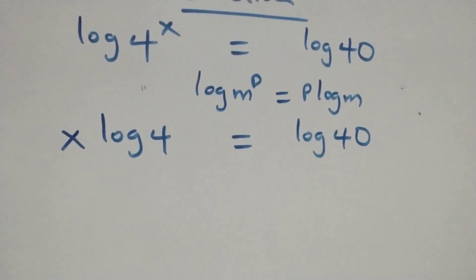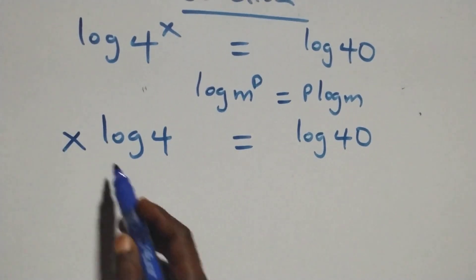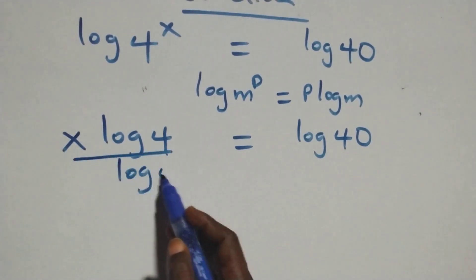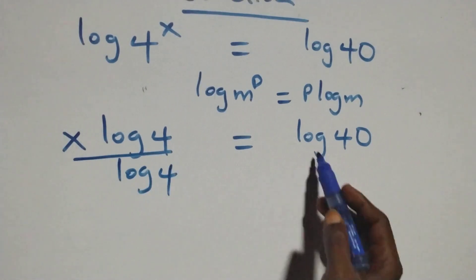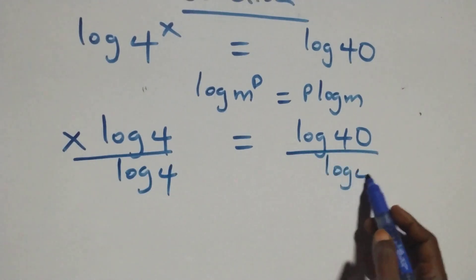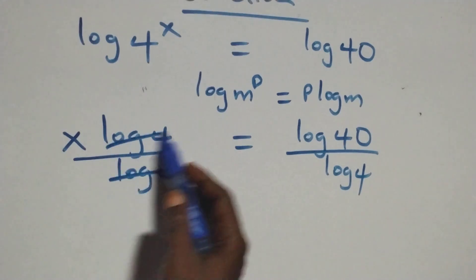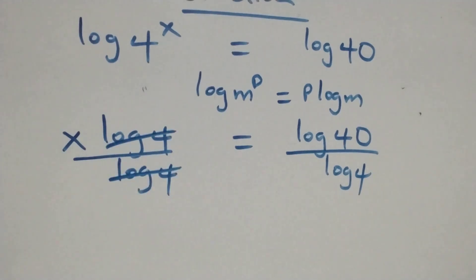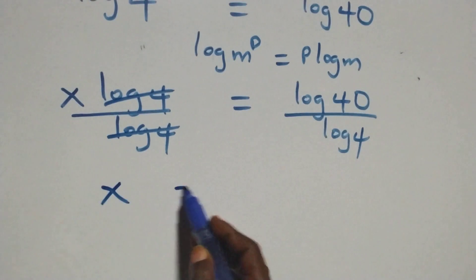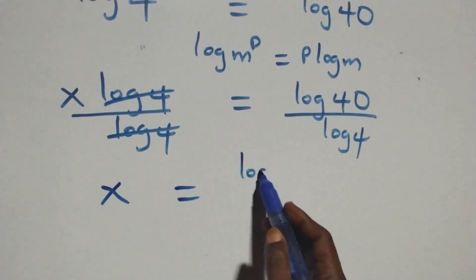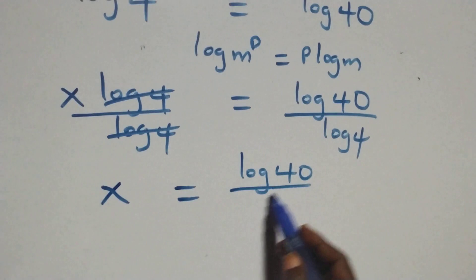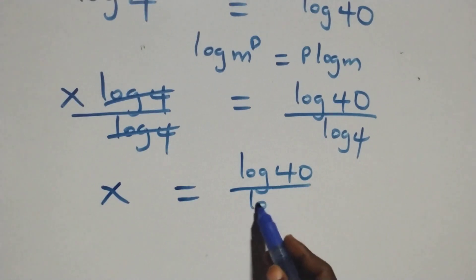The next step here: we divide both sides by log 4. We divide this side by log 4 and also divide the other side by log 4, which implies log 4 cancels with each other, and we have x equals to log 40 over log 4.